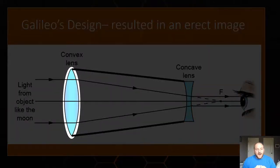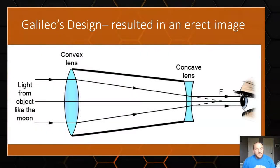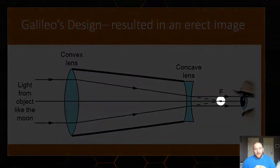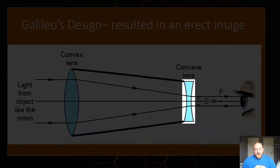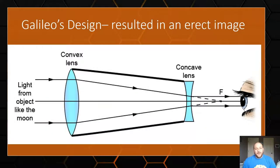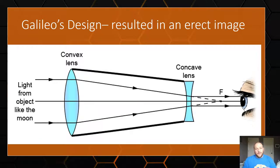Galileo's design uses a large primary convex lens to focus light toward a focal point. Before the light reaches that focal point, a concave or diverging lens splits the light back out so it comes into your eye as an enlarged image. Because the light never actually passes through the focal point, the objects in Galileo's scope appear right-side up — not upside down — which is useful from a military standpoint when spotting ships.